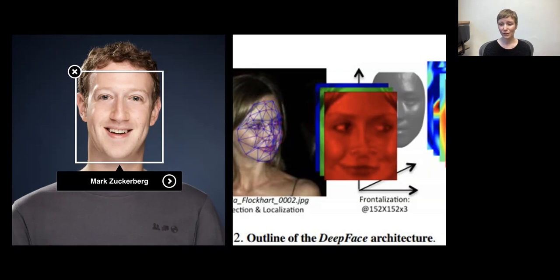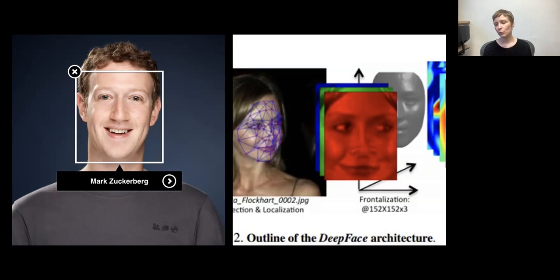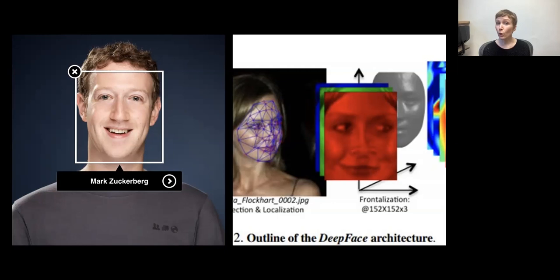At first glance this might seem harmless enough. Facebook used this technology for things that seemed helpful and efficient: automatically recognizing people in photos, suggesting image tags, and generating alternative text for visually impaired users. But from a critical perspective, DeepFace also raised serious concerns about how corporations like Facebook could use AI and facial recognition to violate users' privacy, create forms of targeted advertising geared toward profit, and use facial recognition for surveillance in ways that could be sold or shared with other corporations or entities.